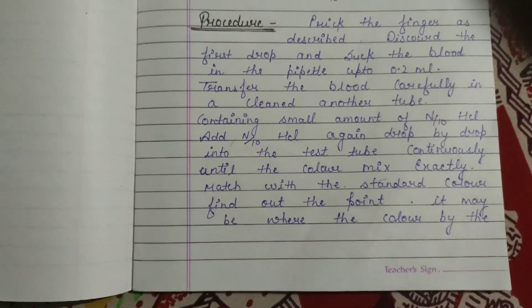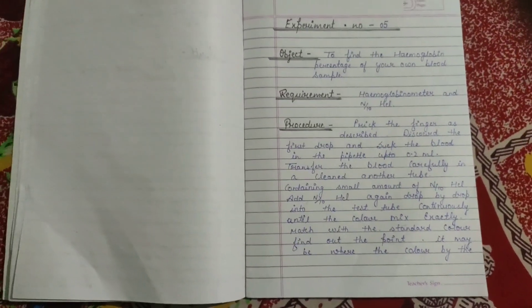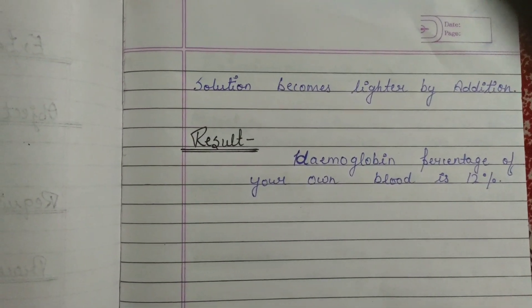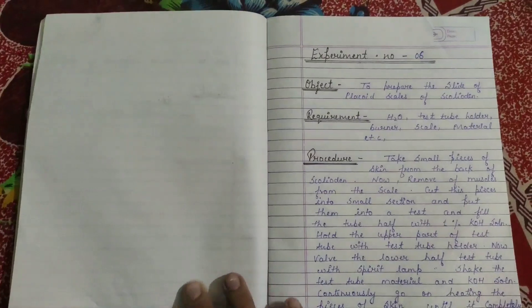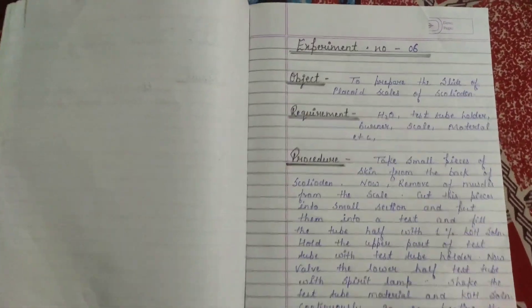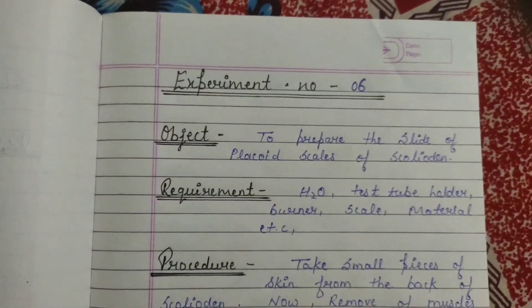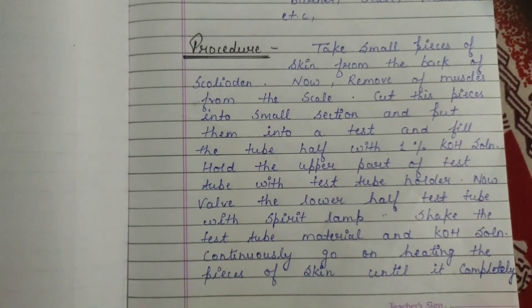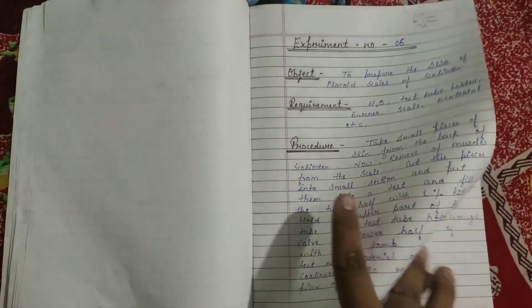Experiment number five has the procedure mentioned here, along with objectives and requirements for this experiment, and in the last the result is also mentioned. Now there is experiment number six, where similar headings are mentioned — objectives, requirements, and procedure.